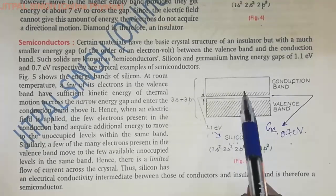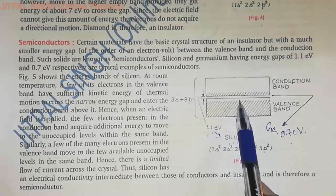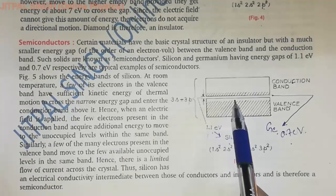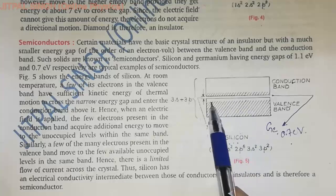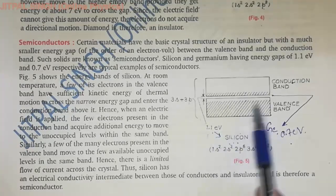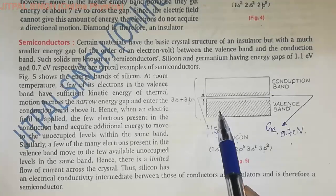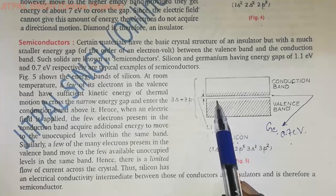As an electron shifts from the valence band to the conduction band, unoccupied levels are created. This shaded region represents the electrons that can jump into those unoccupied levels.